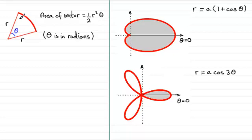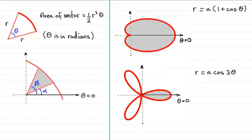Now it's a simple extension of this idea when it comes to working out areas bounded by a curve, something like this, where you've got our curve and you've got two lines coming from the pole here.